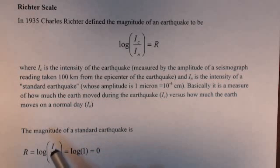So the magnitude of a standard earthquake, we would do log of I_n over I_n, which is log of 1, which equals 0. So on the Richter scale, it would have a magnitude of 0.